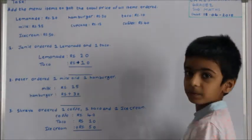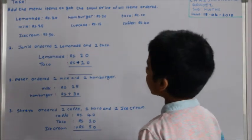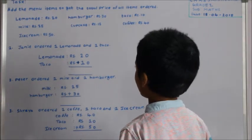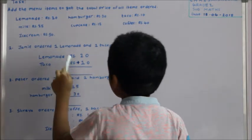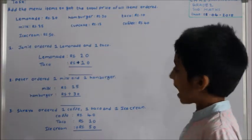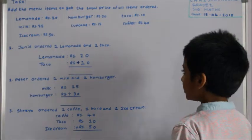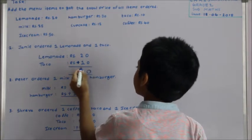Let's start the word problems. First, let's read the word problem. Jamie ordered one lemonade and one taco. Lemonade: rupees 20, taco: rupees 10. We need to add it. Zero plus zero is zero, two plus one is 30.